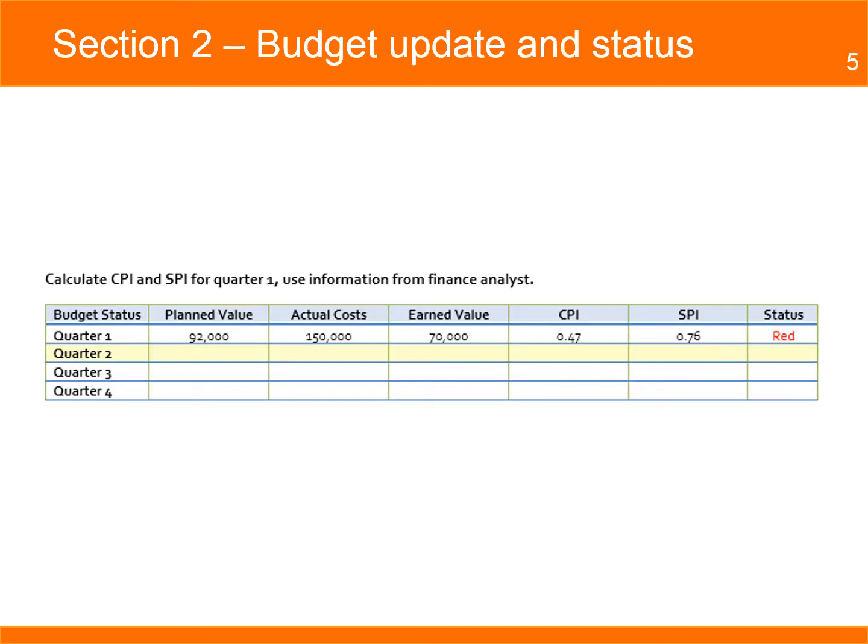Section 1 also contains information on the budget performance using earned value analysis: the planned value, the actual cost to date, the earned value to date, and the cost performance index and schedule performance index.